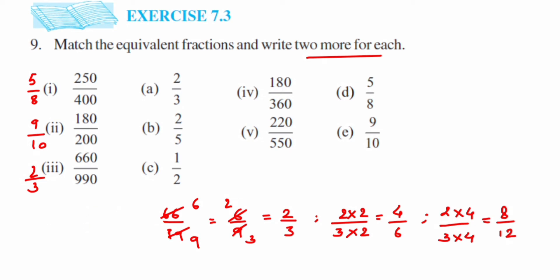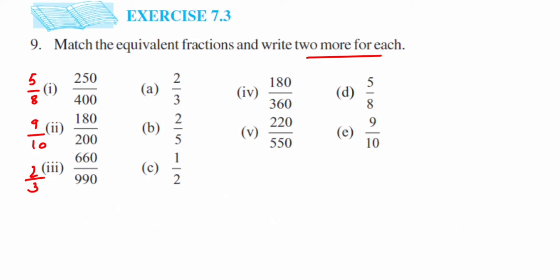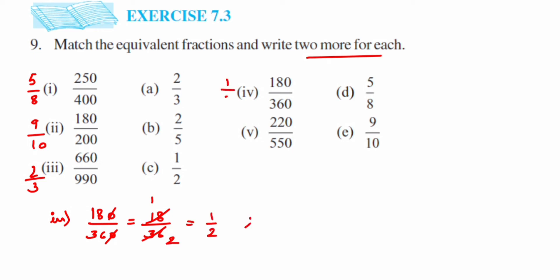The fourth one is 180 upon 360. We have zeros at the end — cancel the zeros to get 18 upon 36. We can cancel this in the 6 table or directly in the 18 table, or simply in the 2 table. Simplifying gives us 1 upon 2.